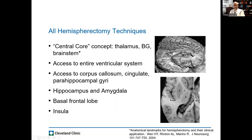I try to stay out of the thalamus. Access to the entire ventricular system is necessary for this operation, as is access to the corpus callosum and the cingulate and perihippocampal gyri to successfully complete the disconnection. I remove the hippocampus and amygdala, the basal frontal lobe, and the insula in all patients. This is somewhat controversial — there is no good scientific data to say you have to remove the insula — but I have not found it terribly vascular or difficult to remove, so I do it in everyone.